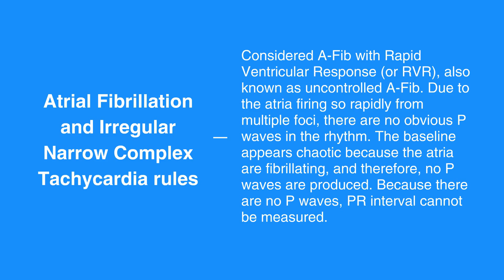Due to the atria firing so rapidly from multiple foci, there are no obvious P waves in the rhythm. The baseline appears chaotic because the atria are fibrillating and therefore no P waves are produced. Because there are no P waves, the PR interval cannot be measured.